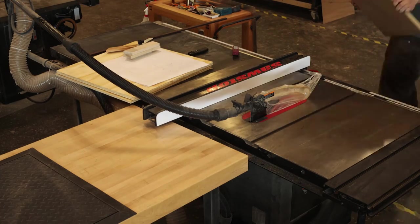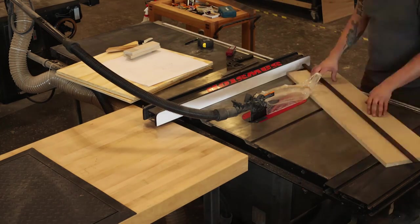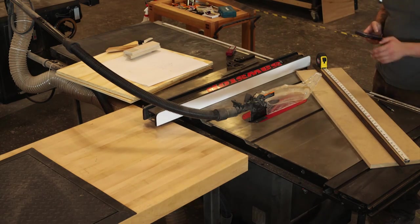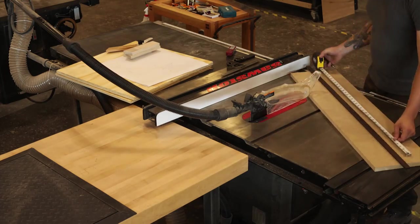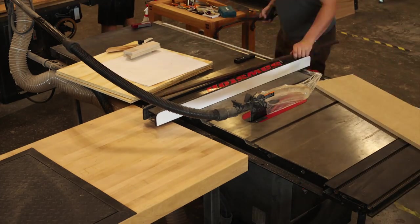I began by ripping down some three-quarter inch MDF. And not pictured here is me actually screwing down this Wenge runner. So I cut that runner to three quarters of an inch, a little shy of three quarters of an inch to fit the table saw.